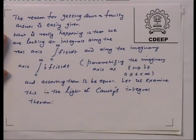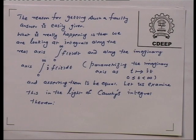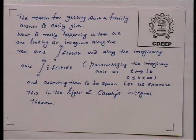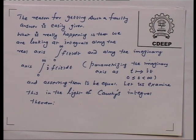It is not that the answer came out correct but the method is wrong and we are just being very fussy about mathematical correctness. It is not a question of making a fuss. It is serious. The reason for getting such a faulty answer is easily given. What is really happening is that we are looking at integrals along the real axis — integral 0 to infinity f(t) dt — and along the imaginary axis. After making a change of variables, the integral goes over the imaginary axis, and when you parameterize the imaginary axis as t going to it, you are getting i·f(it) dt.